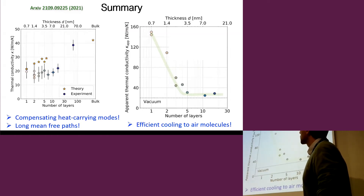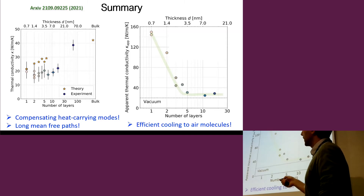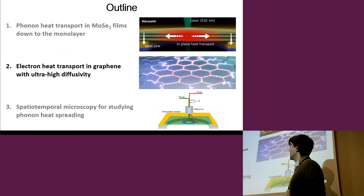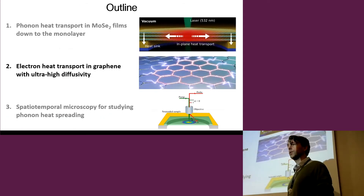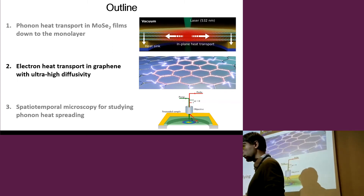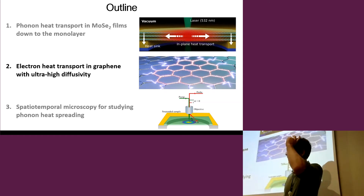That summarizes the first part: in-plane and out-of-plane phonon heat transport in suspended MoS2, with both theoretical and experimental results showing weak thickness dependence. Now I move to the second part, which is quite different — we look at graphene, also a 2D layered material, but now focusing on electronic heat diffusion.